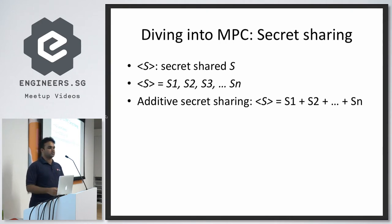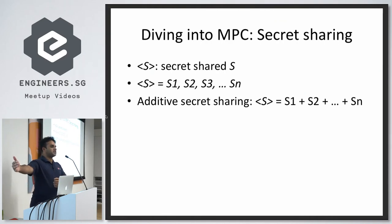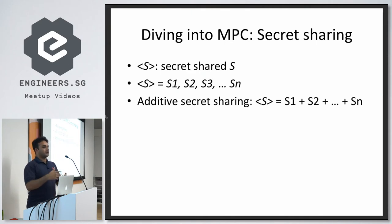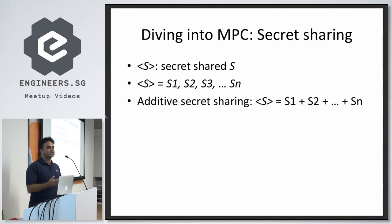A simple way to do that is to compute S as a sum of S1, S2, up until SN. You distribute S1 through SN to N parties, and none of them knows the actual secret unless all of them get together and add up their shares. That's called additive secret sharing — perhaps the simplest of secret sharing protocols.